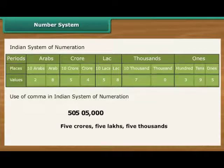The second comma comes two digits later, five digits from the right. It comes after ten thousands place and marks lakh. The third comma comes after another two digits, seven digits from the right. It comes after ten lakh.